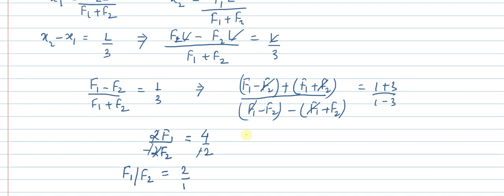So the final answer: the ratio we are getting is F1 : F2 = 2 : 1. This is our final answer. Thank you.